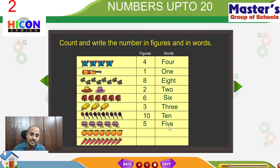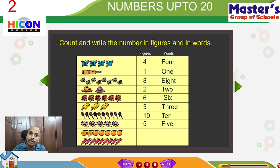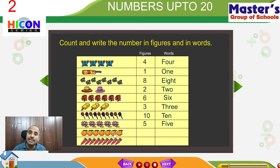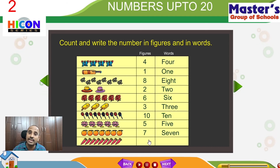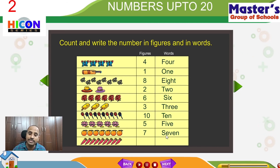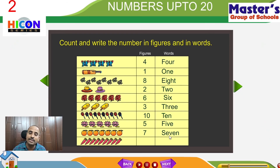The next set has oranges. Let us count how many oranges there are: 1, 2, 3, 4, 5, 6, 7. Very good! How many oranges are there? 7. The 7 can be written as this number, and in words: S, E, V, E, N — seven.